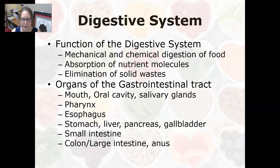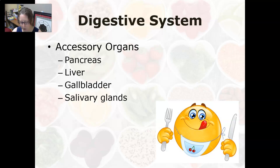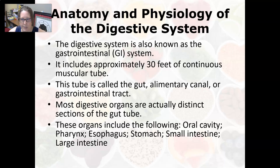The organs of the gastrointestinal tract are the mouth, oral cavity, salivary glands, the pharynx, the esophagus, the stomach, liver, pancreas and gallbladder, the small intestine, the colon or large intestine, and the anus. The accessory organs are the pancreas, liver, gallbladder, and salivary glands. They are considered accessory organs because food does not go through those organs, but they do contribute to the digestive process. The digestive system is also known as the GI system or gastrointestinal system. It includes approximately 30 feet of a continuous muscular tube, called the gut, also the alimentary canal or the gastrointestinal tract.